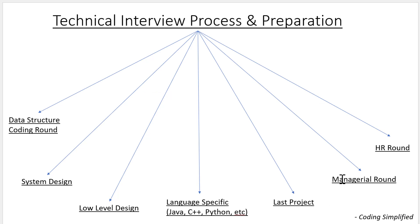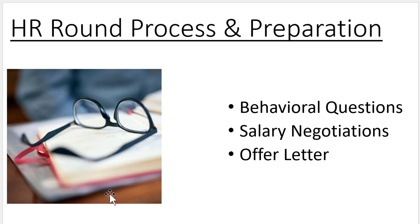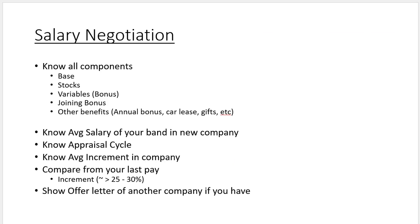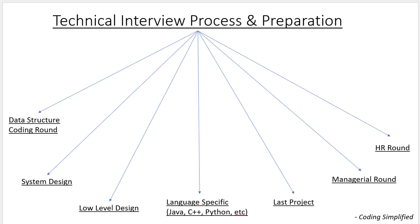The HR round generally happens only if you are selected through all previous rounds. In the HR round, they can ask behavioral questions, conduct salary negotiations, and then provide the offer letter. For behavioral questions, please see the behavioral question video. For salary negotiation, I've also created a video on how to negotiate salary effectively — what you should do and know before entering salary negotiations.